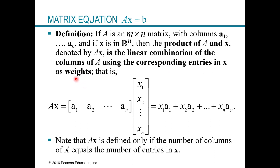It's the linear combination of the columns of A using the corresponding entries in X as weights. Notice A is the matrix where these are the columns, and here's X, the vector. When you multiply, you say column 1 times X1, column 2 times X2, and so on, giving you this linear combination of the columns of A with weights from X. And if it equals something — let's say B — then that's what makes it the equation AX equals B.